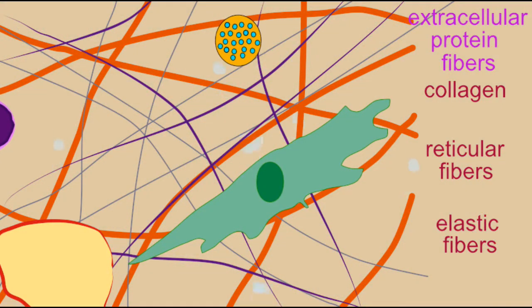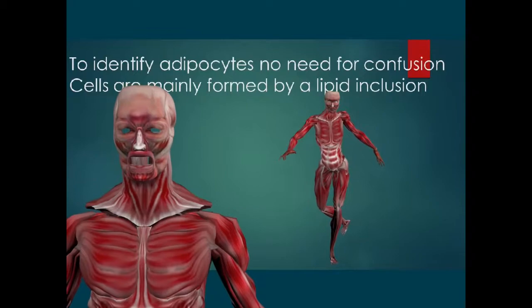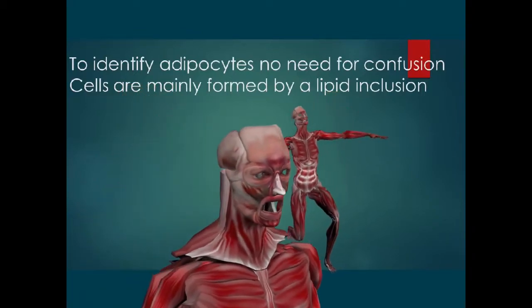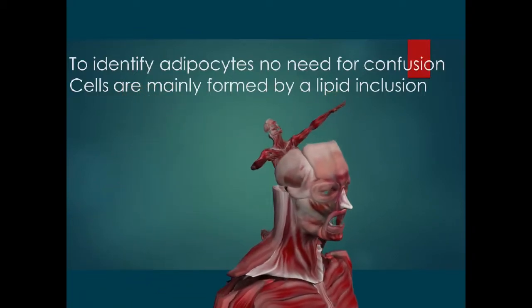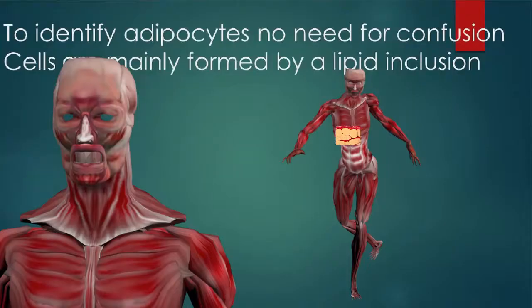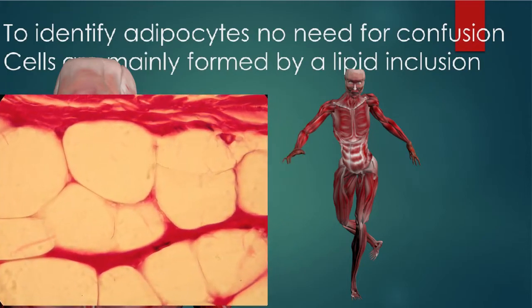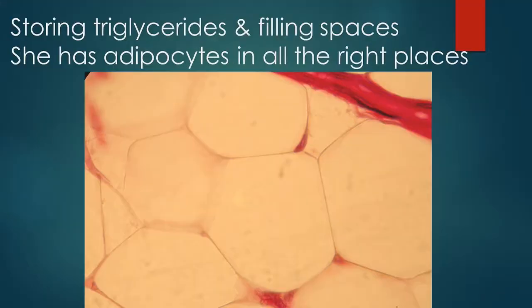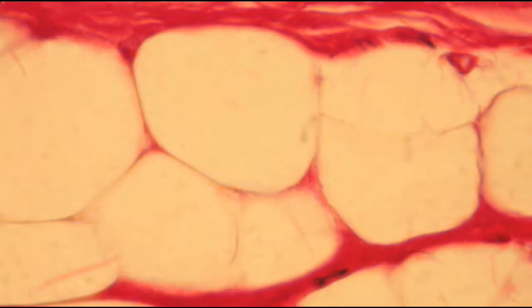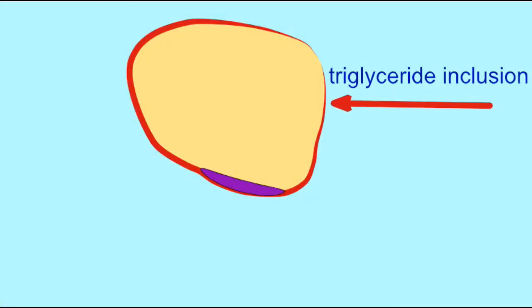To identify adipocytes, no need for confusion. Cells are mainly formed by a lipid inclusion. Storing triglycerides and filling in spaces, she has adipocytes in all the right places.